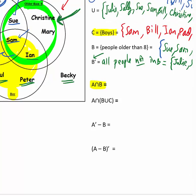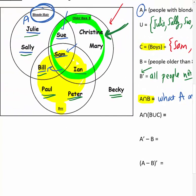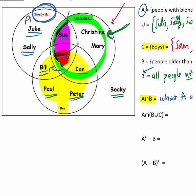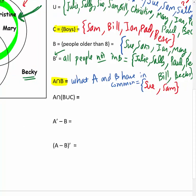A intersect B — remember that's what A and B have in common. That's the football-shaped overlap between A and B. You do include Sam because even though he's part of C, he's still part of A and B. So A intersect B is: Sue and Sam.